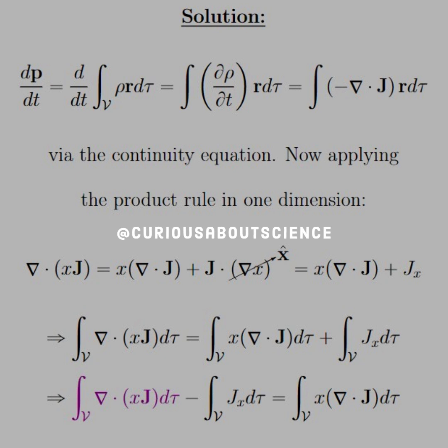Alright, so first things first. Let's write dp/dt with the integral expression of p. We see that that is the time derivative of the integral rho r d tau, as discussed in chapter 3 and 4. But we can take that derivative and put it inside.